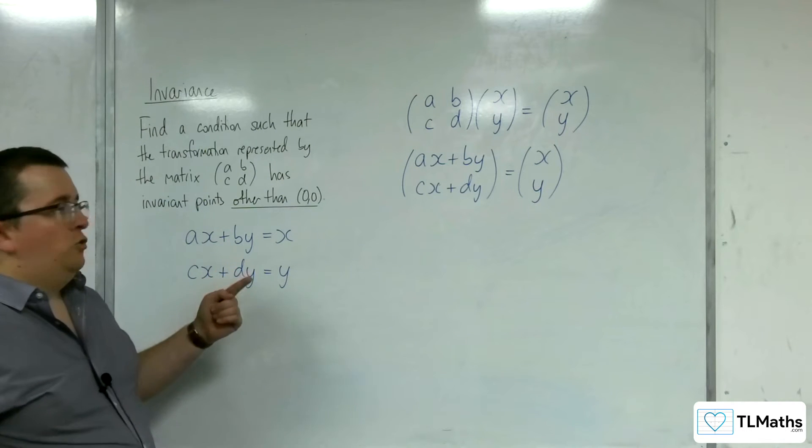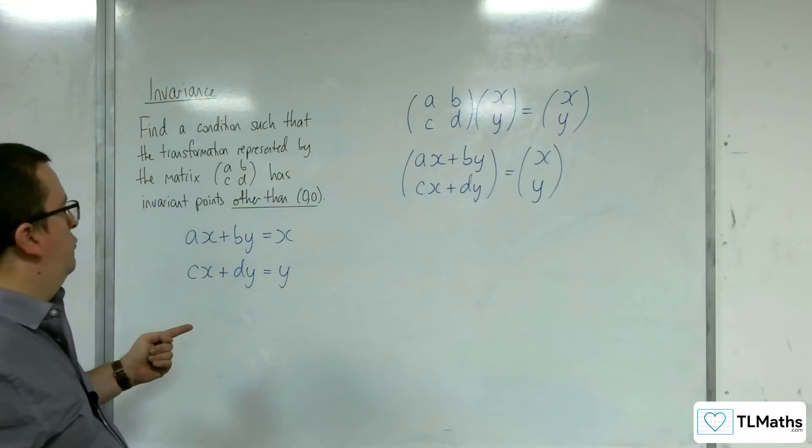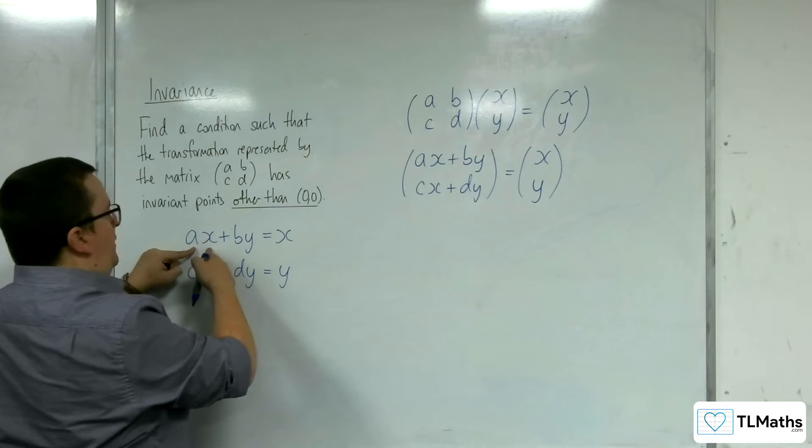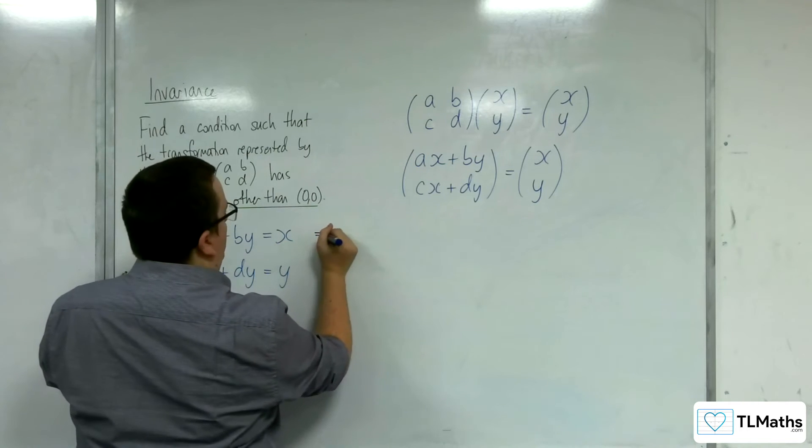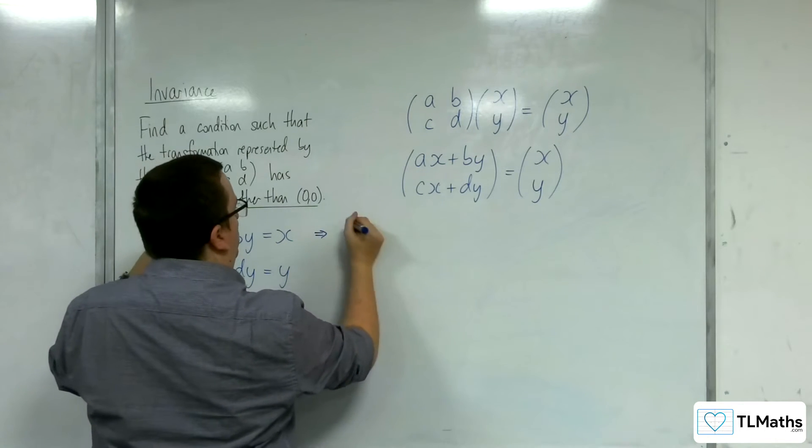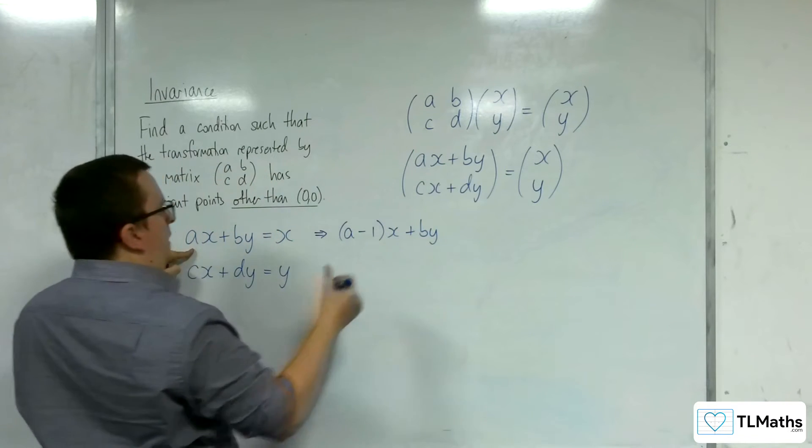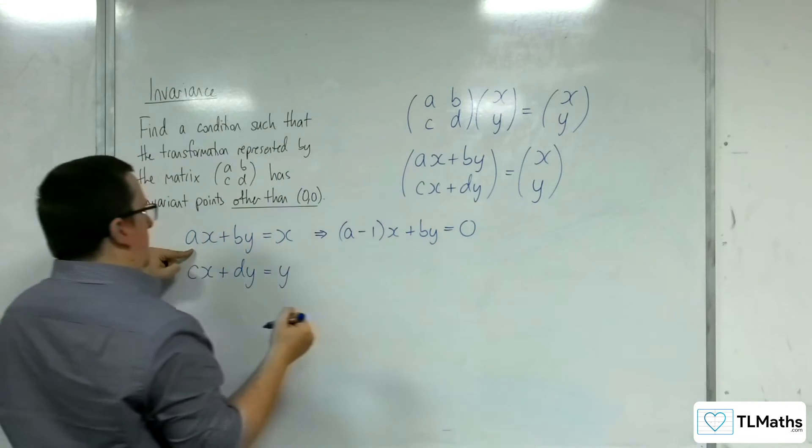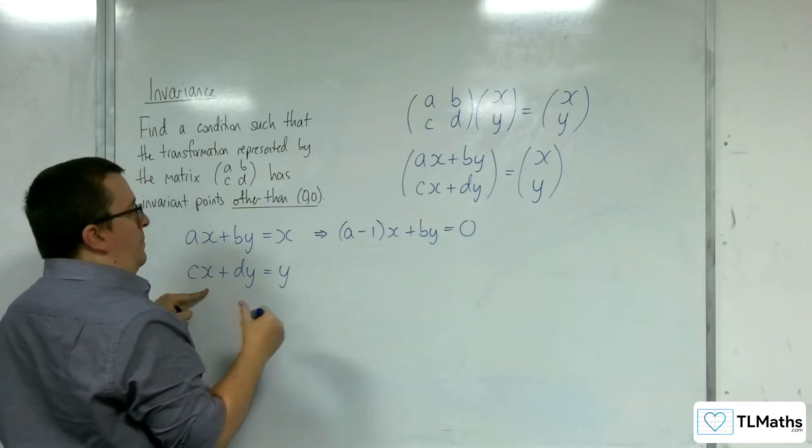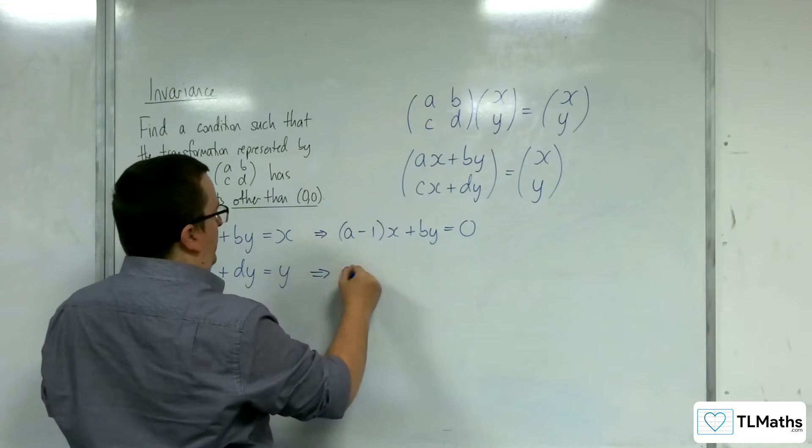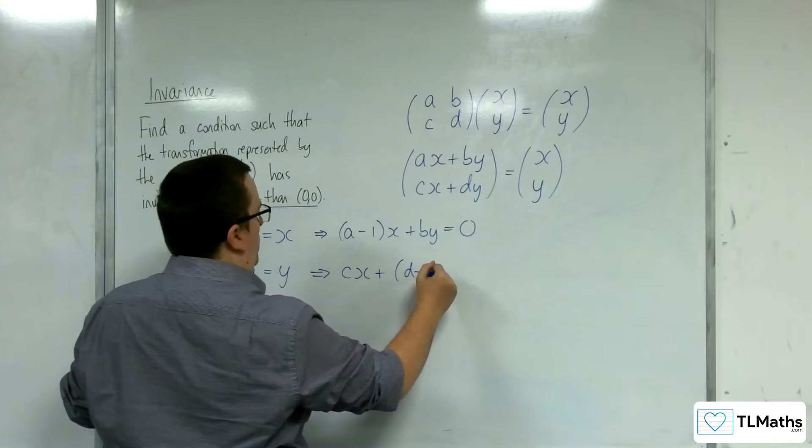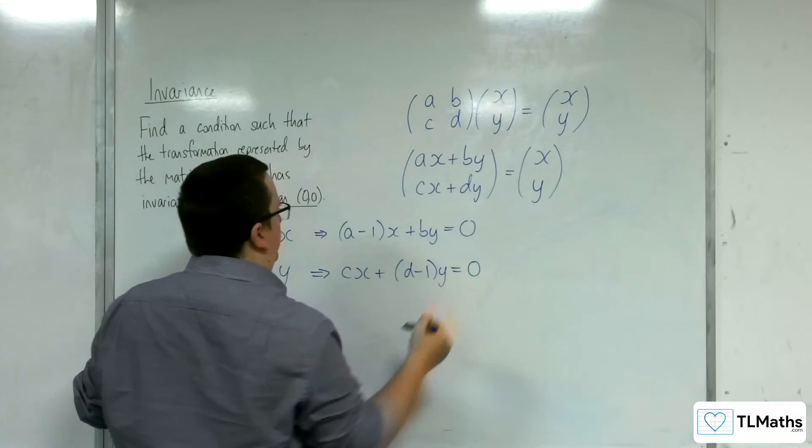Now if I subtract the x from both sides here, I could write that as (a-1)x + by equals 0. And likewise here, subtracting y from both sides, cx + (d-1)y would be equal to 0.